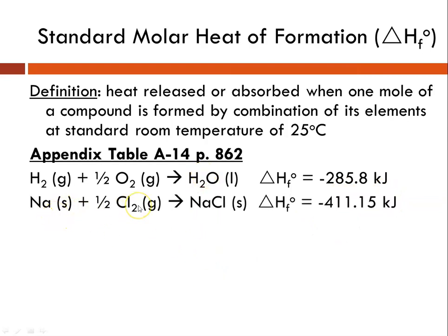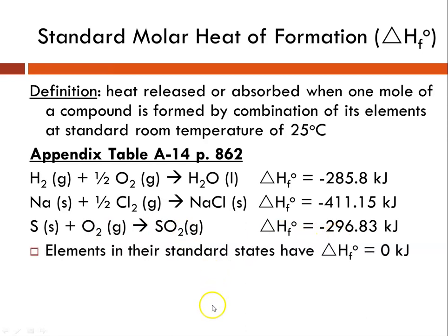For sodium and chlorine combining to form sodium chloride, the heat of formation is negative 411.15. Sulfur combining with oxygen to make sulfur dioxide. All three of these reactions are exothermic because their delta H of formation is negative. It's also good to point out that elements in their standard states have a heat of formation of zero.